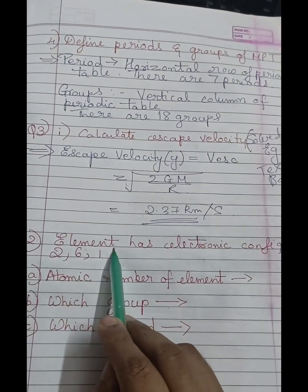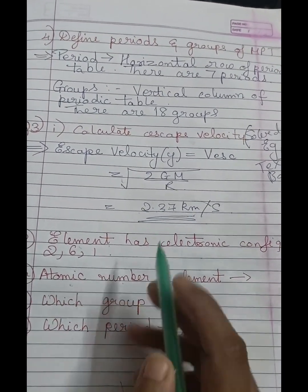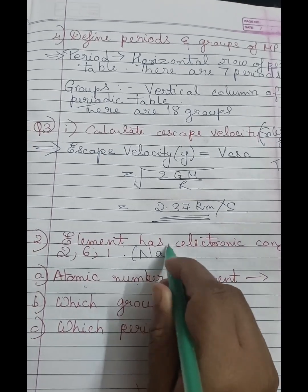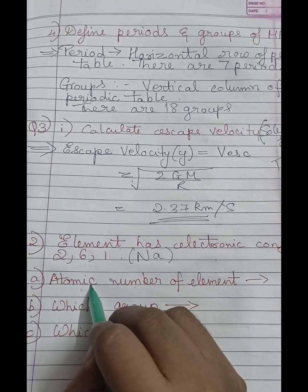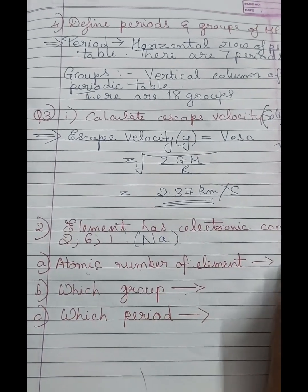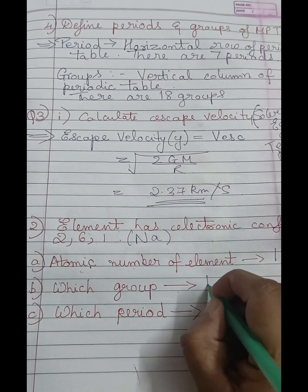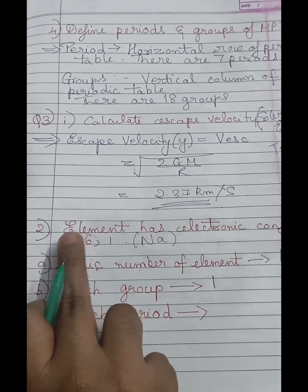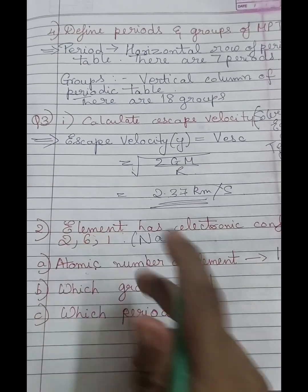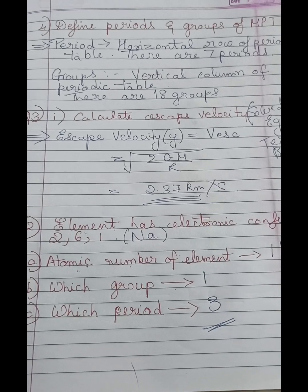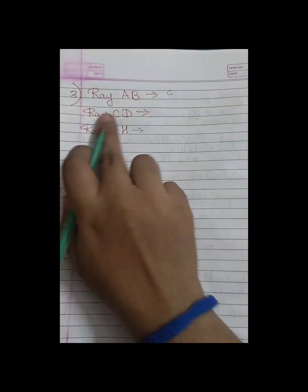Sodium has atomic number 11, group 1 (since the last shell has 1 electron), and period 3.